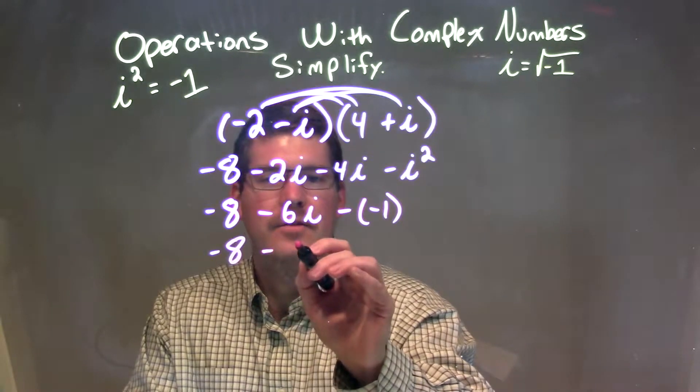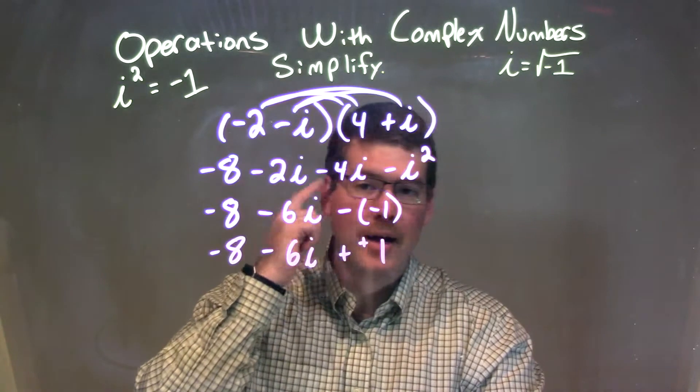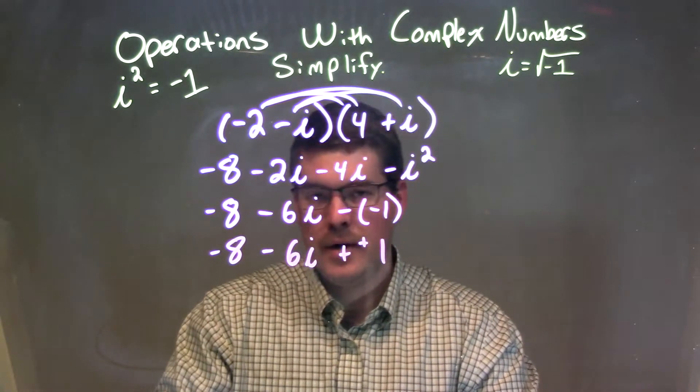Minus 8 minus 6i plus a positive 1, right? Subtracting a negative is like adding a positive. Well, now we can combine the 1 and the minus 8.